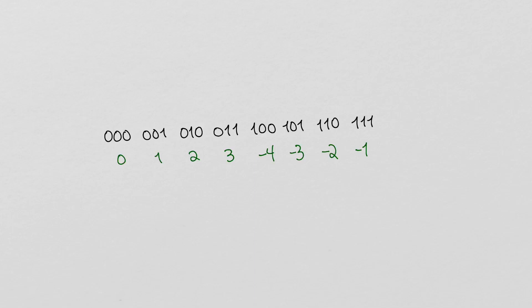If we want to perform arithmetic with these numbers and stay within the system, we should wrap around. In other words, the result of any arithmetic calculation performed on these numbers will be whichever one of the numbers differs from the integer result of the calculation by a multiple of 8.